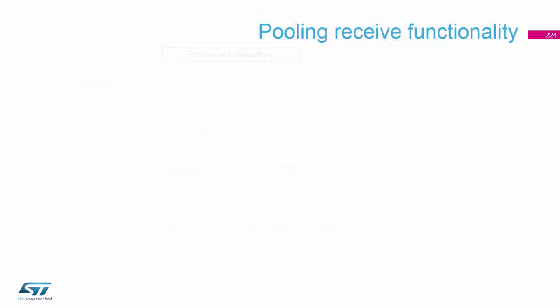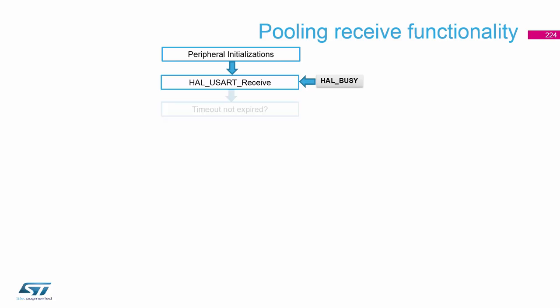How does this work from the inside? We first initialize the periphery - this is clear. Then we call the receive, for example. This sets inside the handle the busy state. We check if the timeout expired - if yes, then we end with the timeout.